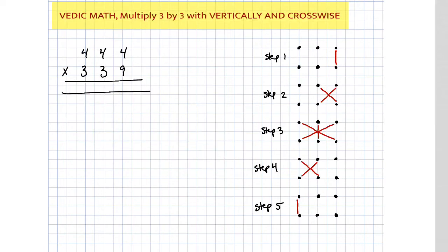Next problem, 444 times 339. Step 1, we just multiply this vertical. Step 1, vertical. So 4 times 9, we know that's 36.